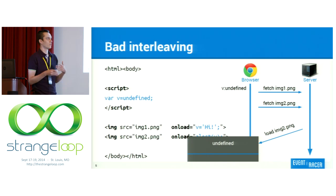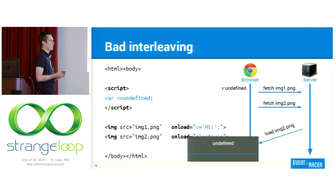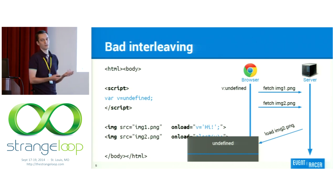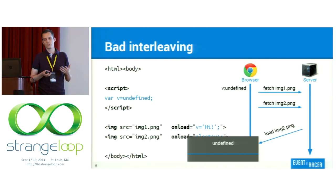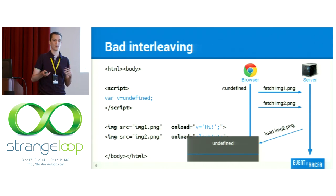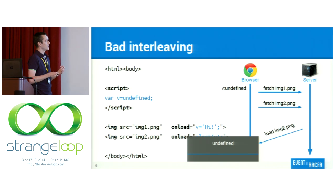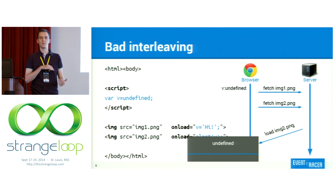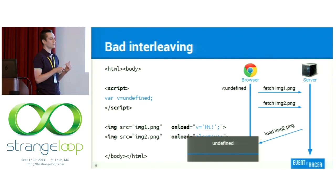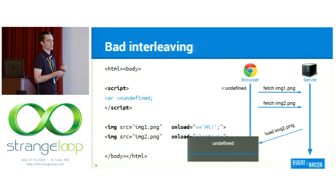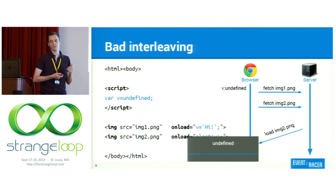But unfortunately, what can happen is that for whatever reason the server first returns the second image — maybe it's much smaller or there are other things going on — and in this case we show this dialogue with the value of undefined, which is probably not what you would expect. Intuitively the problem is that there are two onload callbacks which are not ordered — they can happen in arbitrary order — and they also interfere, meaning they access the same shared state: in this case, this variable v.